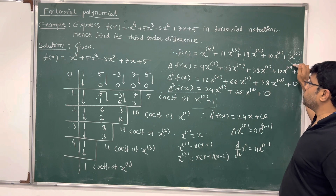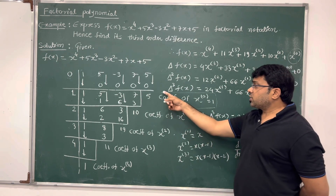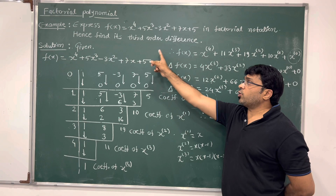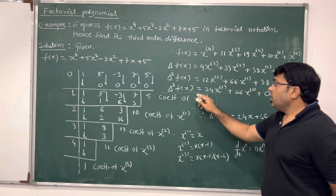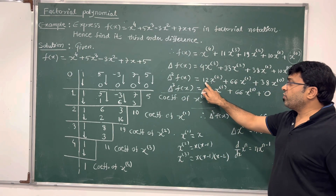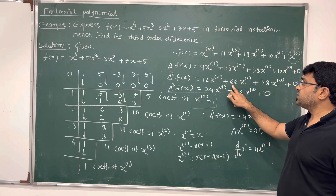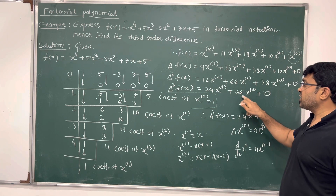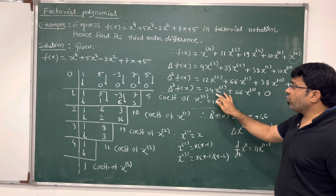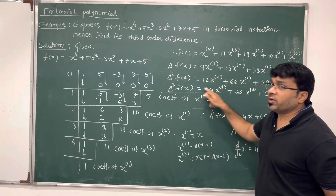For the second forward difference, delta squared of f(x): apply the formula again. 3 times 4 gives 12 times x to the power 2 factorial, plus 2 times 33 gives 66 times x to the power 1 factorial, plus 1 times 38 gives 38 times x to the power 0 factorial. The term 10 is a constant, so its forward difference is 0.